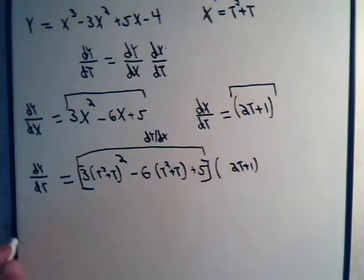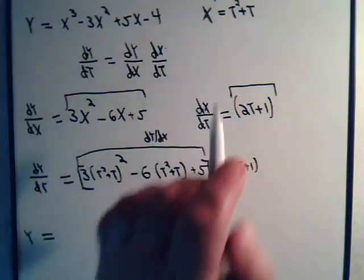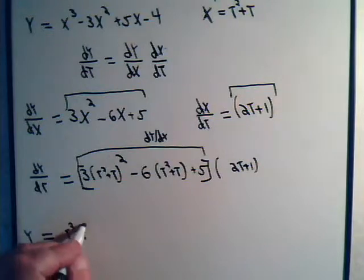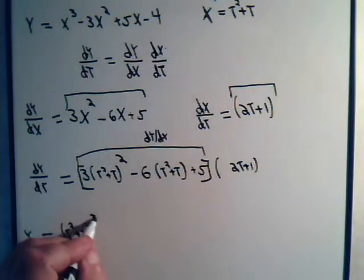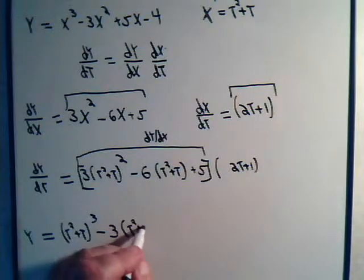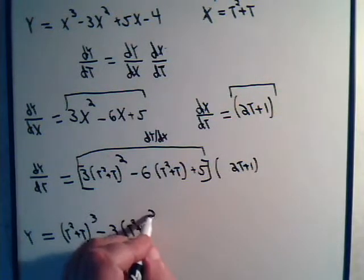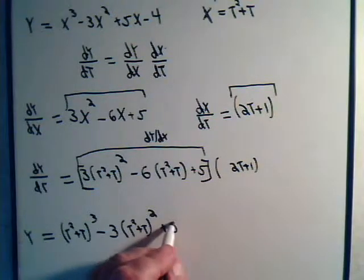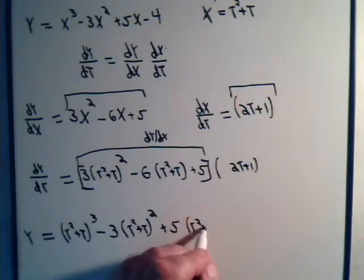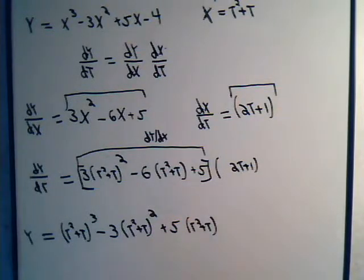Now let's go back to our original equation and substitute x equals t squared plus t directly. So y equals (t squared plus t) cubed minus 3 times (t squared plus t) squared plus 5 times (t squared plus t) minus 4. Now we want to find dy/dt from this expression.